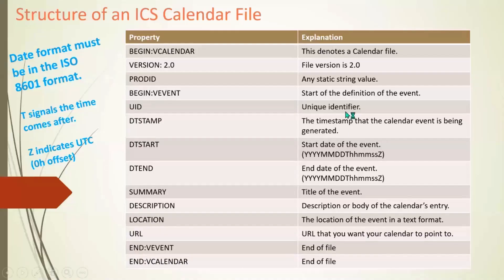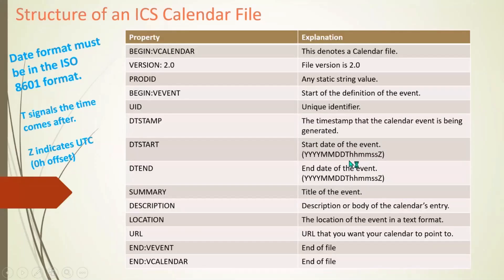UID is just a unique identifier. DTSTAMP is the timestamp of when you are generating the calendar event — a very important property. The two most important properties that define any calendar event are DTSTART and DTEND — the start and end date and time. These must be in ISO 8601 format: YYYYMMDDTHHMMSSZ, where T denotes time and Z represents the UTC offset.